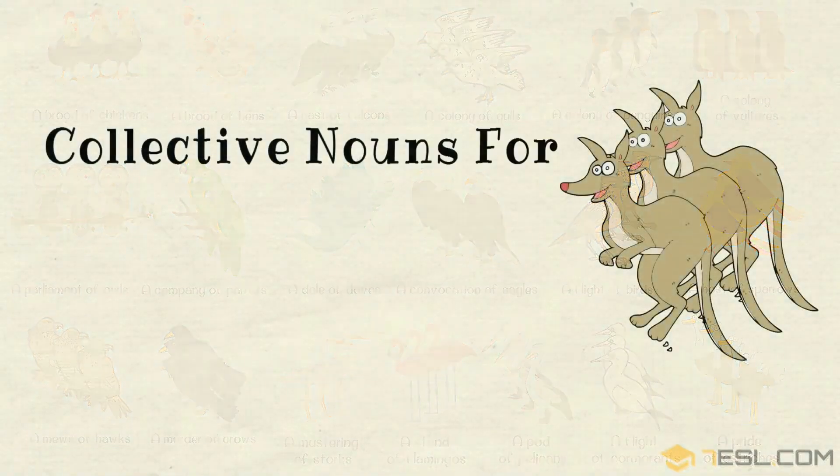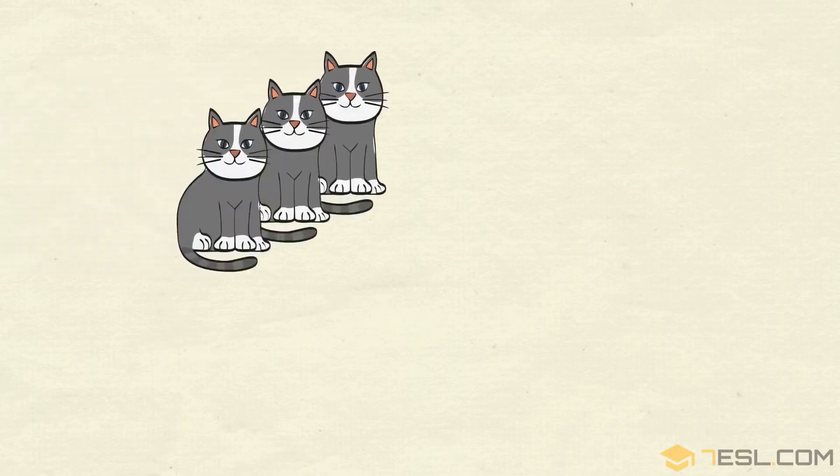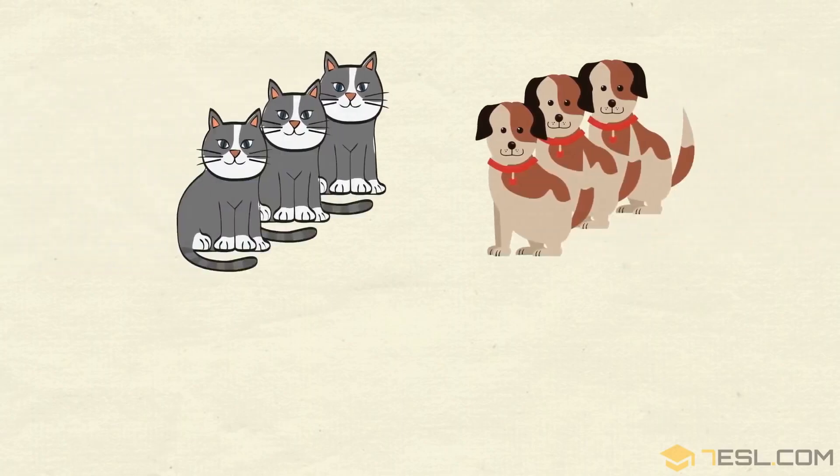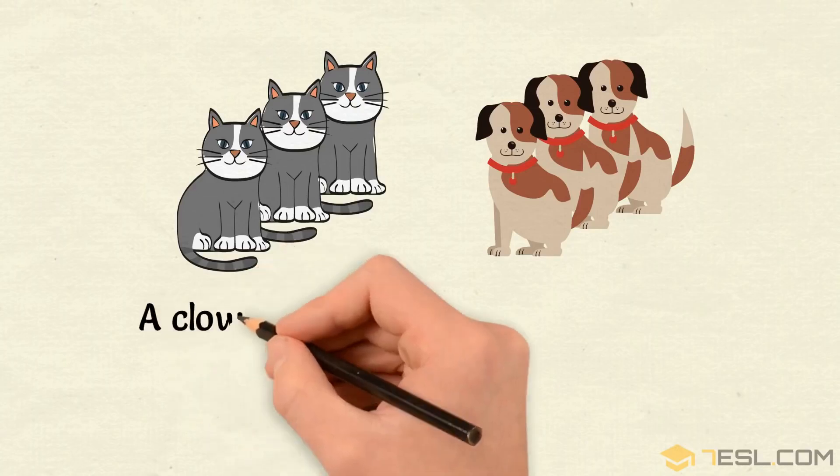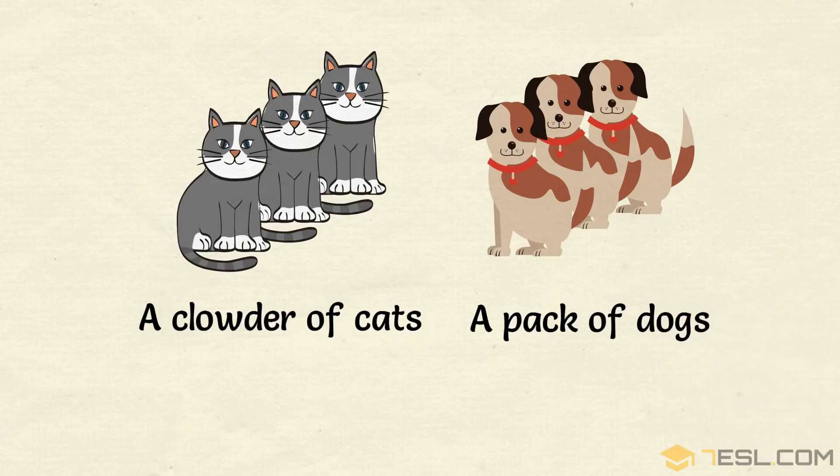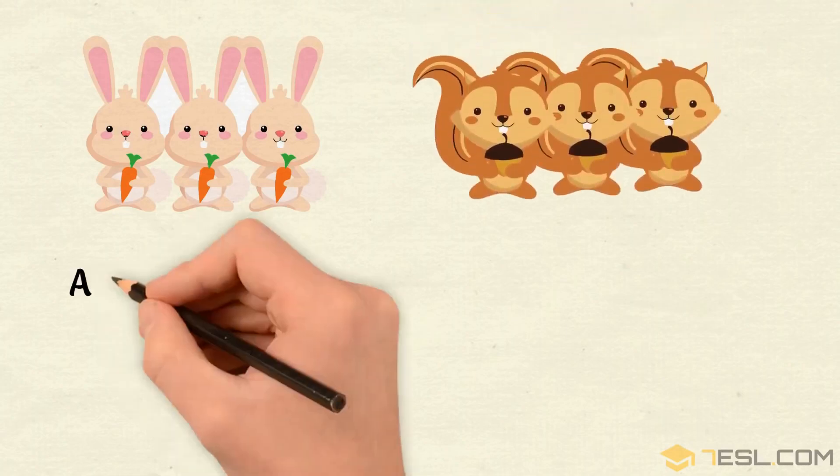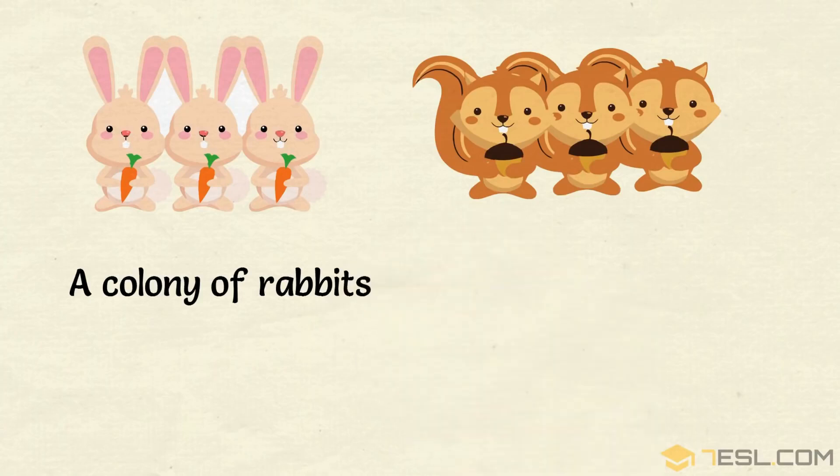Collective nouns for mammals. A clowder of cats, a pack of dogs, a colony of rabbits, a dray of squirrels.